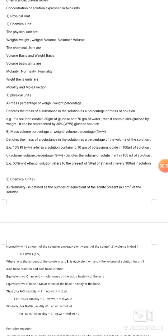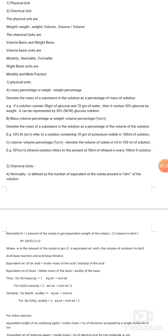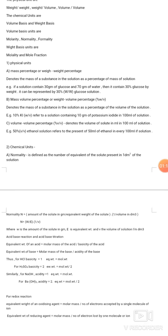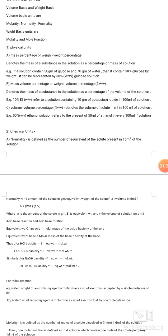Mass volume percentage, or weight by volume percentage, denotes the mass of a substance in a solution as a percentage of the volume of the solution. For example, 10% KI refers to a solution containing 10 grams of potassium iodide in 100 ml of solution.